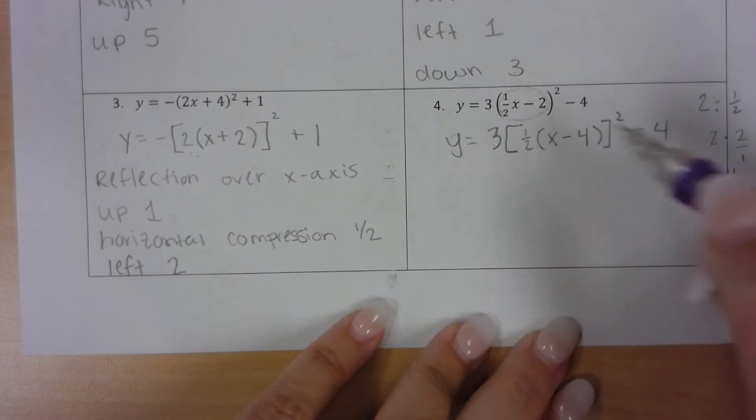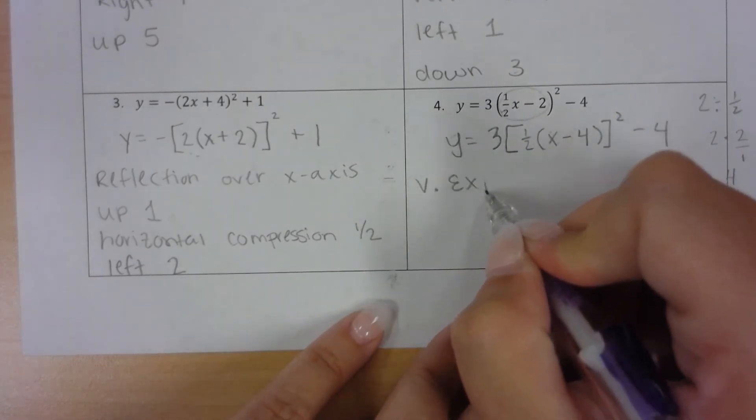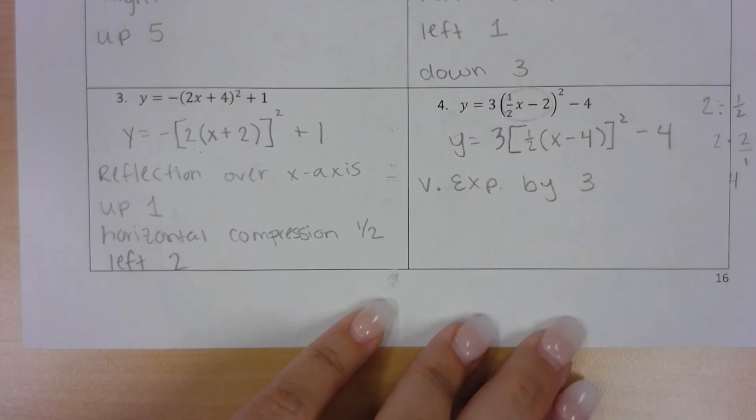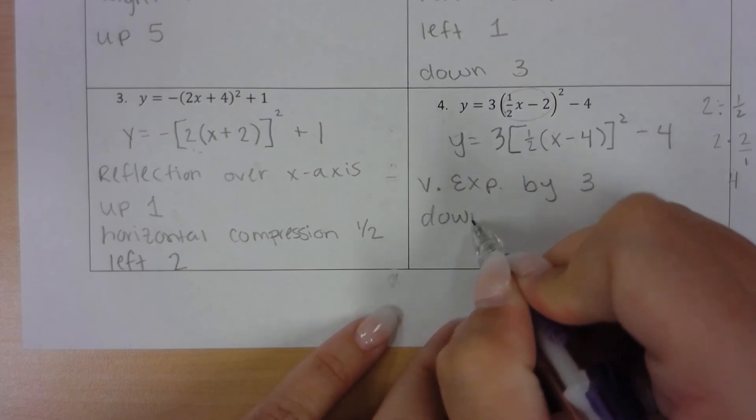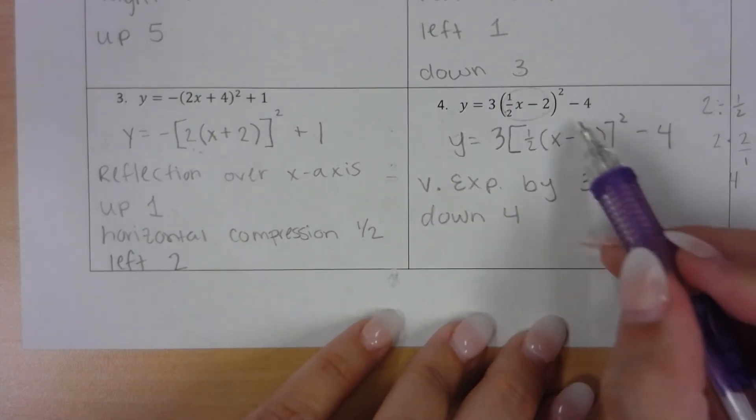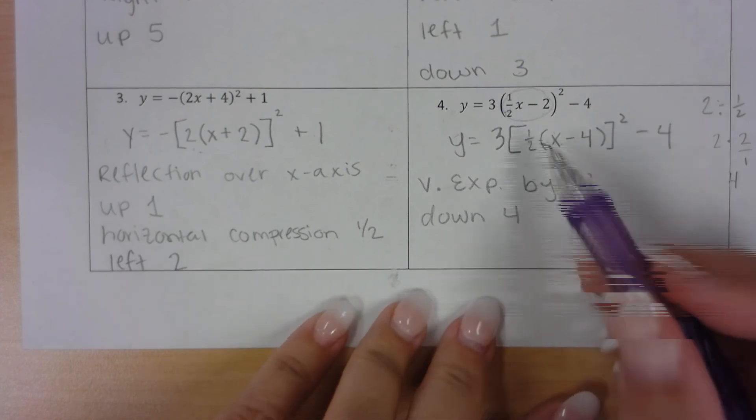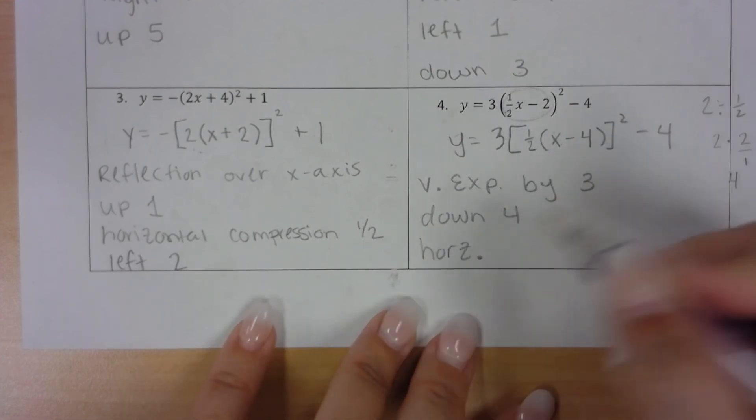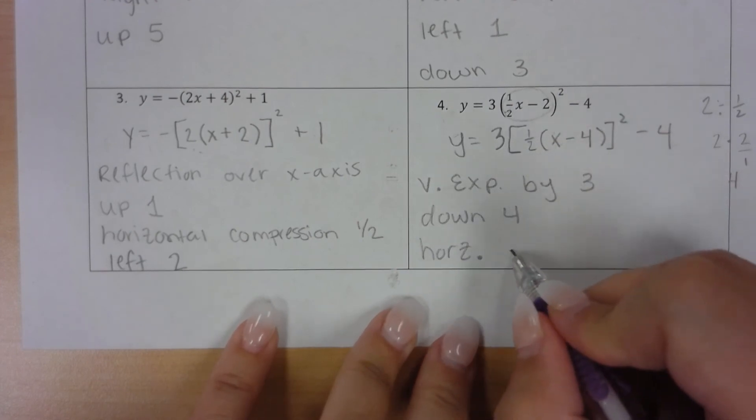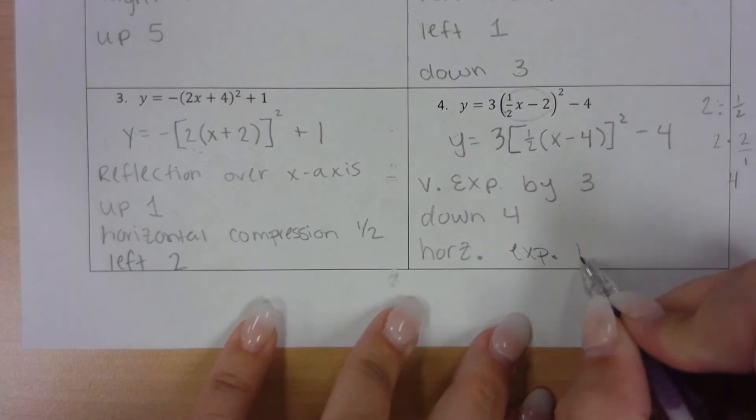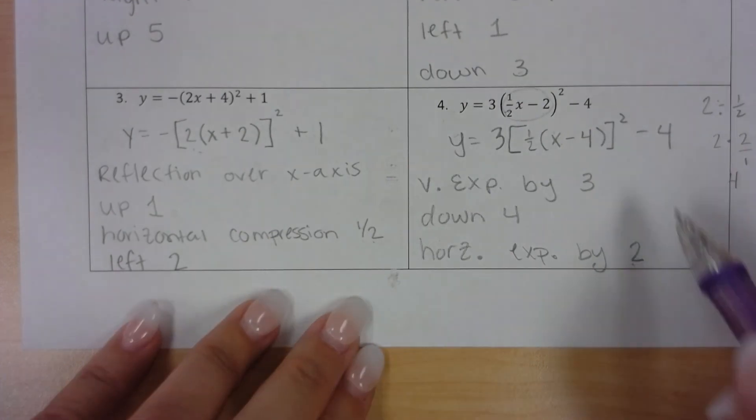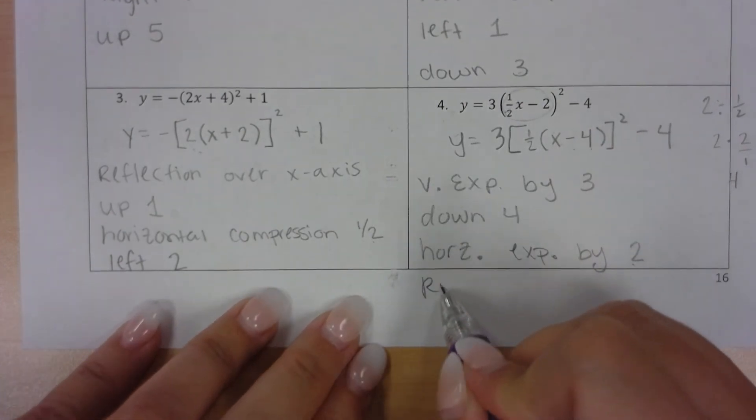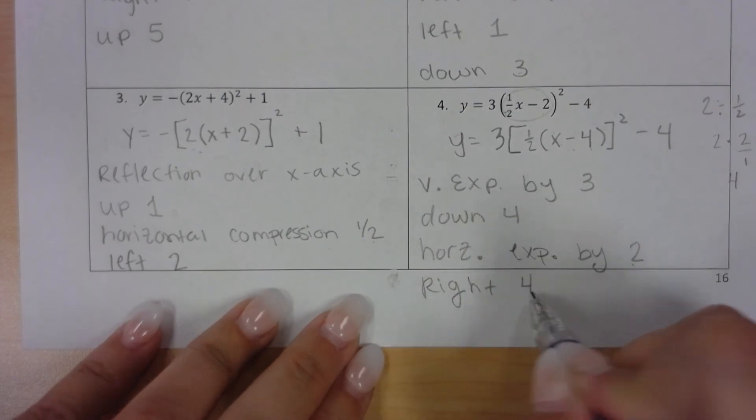Now I can go through. So the 3 is on the outside, so that's a vertical expansion by 3. The minus 4 is on the outside of the parentheses, so that's a down 4. And then anything inside of our parentheses is horizontal. Now we think opposite with horizontal. So if it's a 1 half, it's really an expansion by, and then flip the 1 half, 2. So this 2 became a 1 half. This 1 half flipped to become 2. And then minus 4 really tells us right 4.